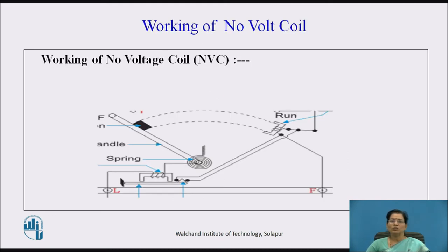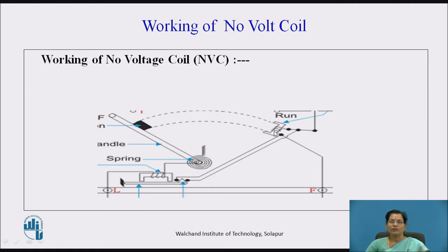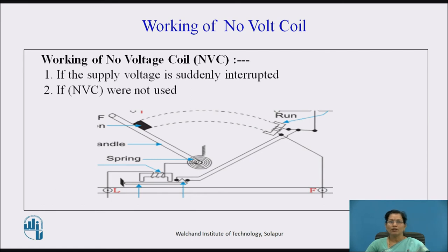Let us see about the working of the no-volt coil. When current flows through this coil, the no-volt coil creates a magnetic field, and when we move this arm from the first position to the run position, due to this magnetic field, the arm remains at that point. But if the supply voltage is suddenly interrupted, then this no-volt coil demagnetizes, and due to the spring action, this handle moves to the off position.